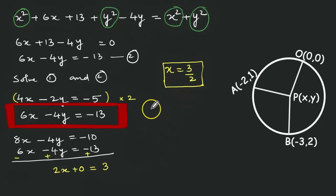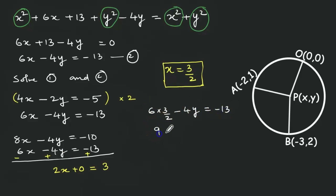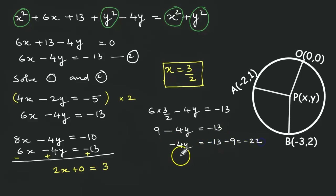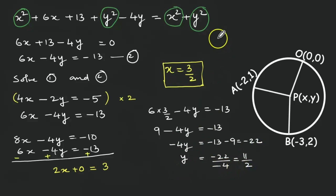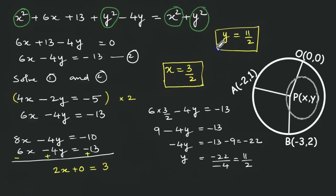Substituting x equals 3/2 into equation 2: 6 times 3/2 minus 4y equals minus 13. The 6 and 2 cancel, giving 3 times 3 equals 9. So 9 minus 4y equals minus 13, thus minus 4y equals minus 13 minus 9 equals minus 22, therefore y equals minus 22 divided by minus 4, which equals 11 by 2. So the coordinates of center P are x equals 3/2 and y equals 11/2.